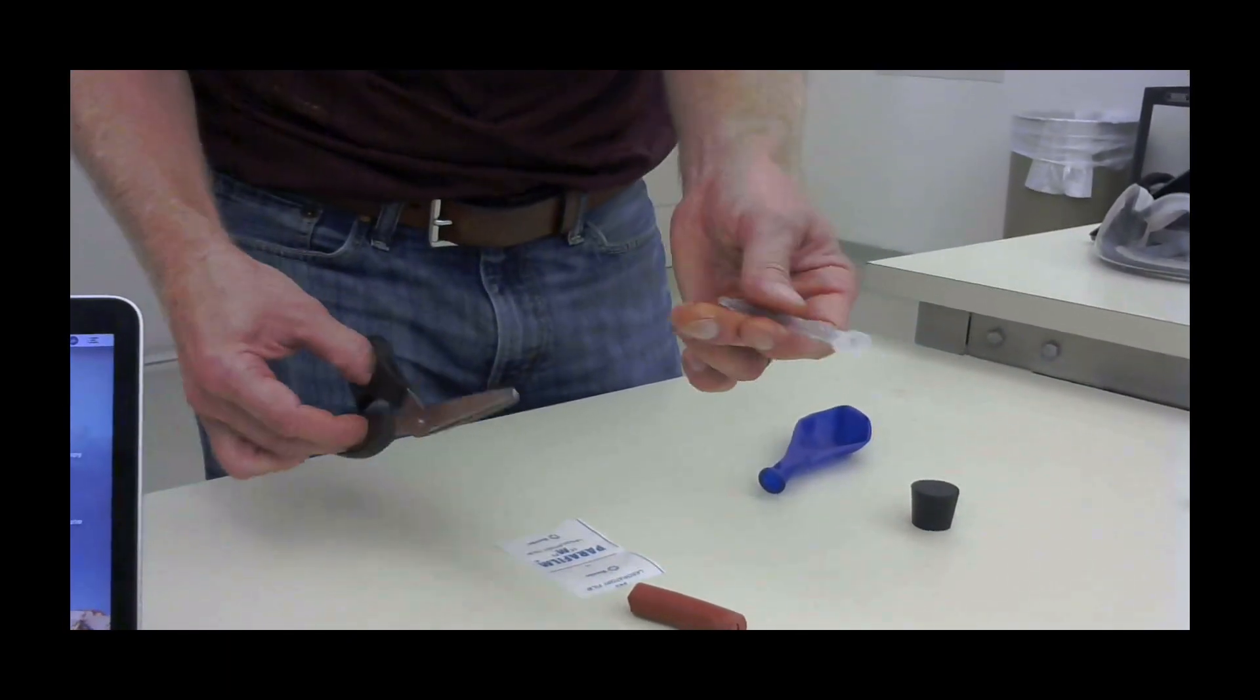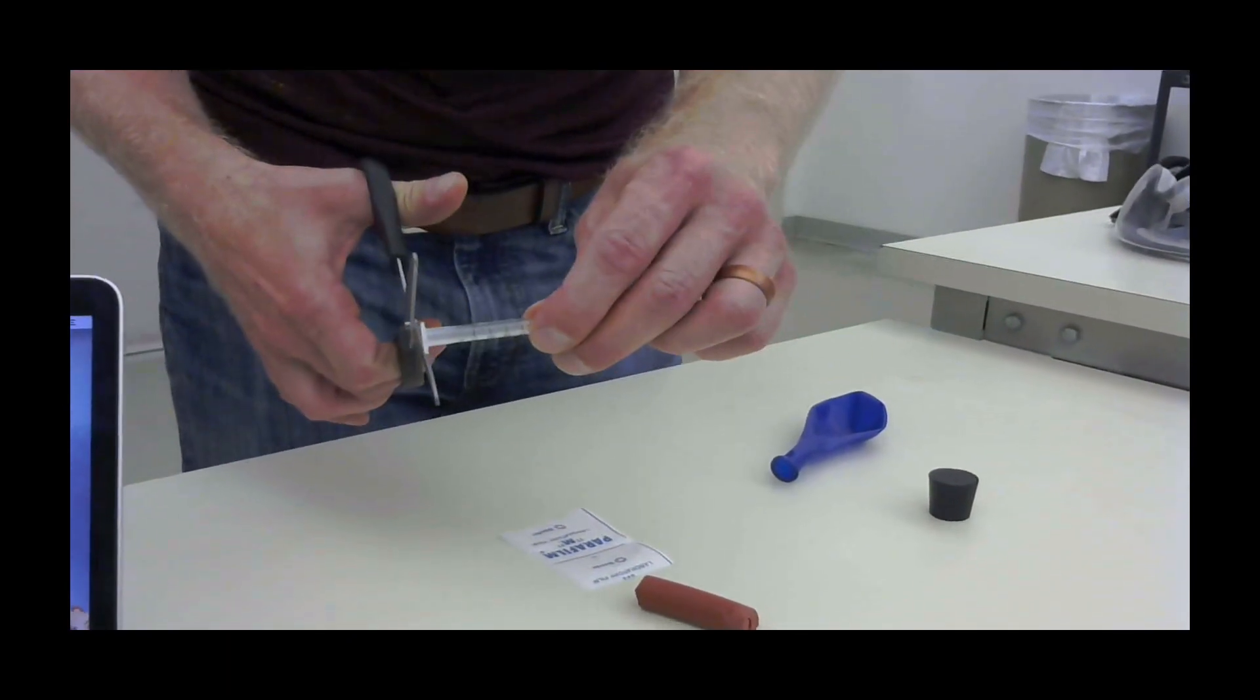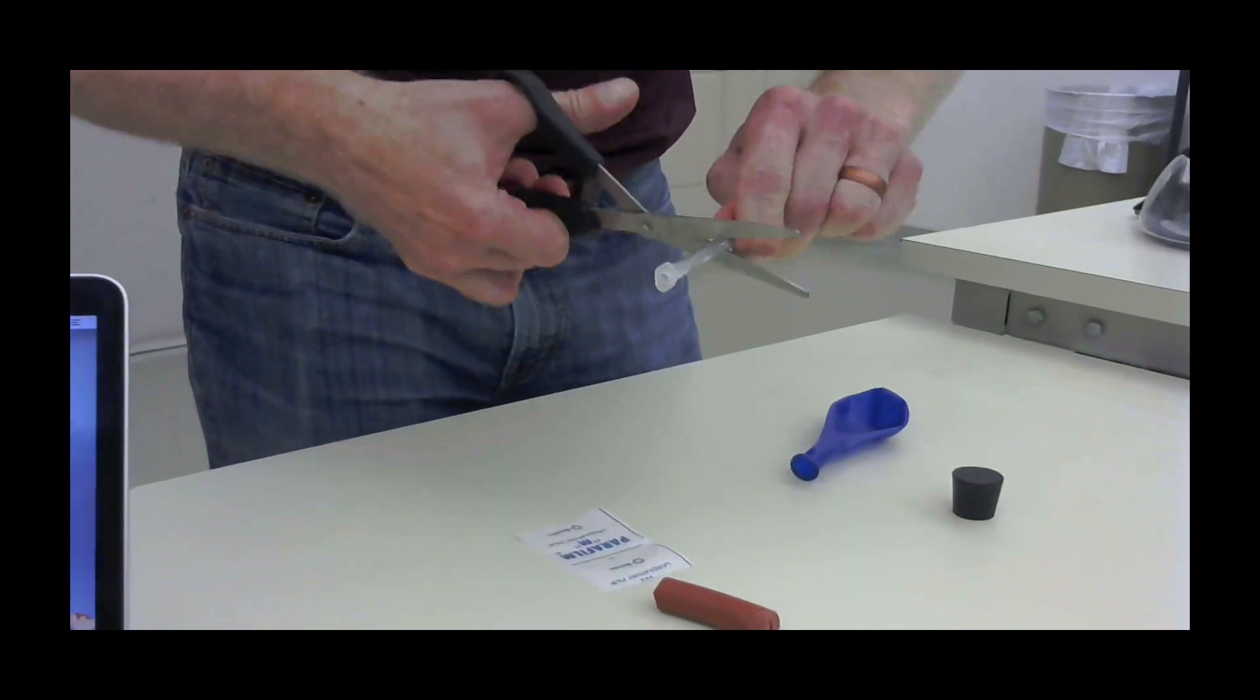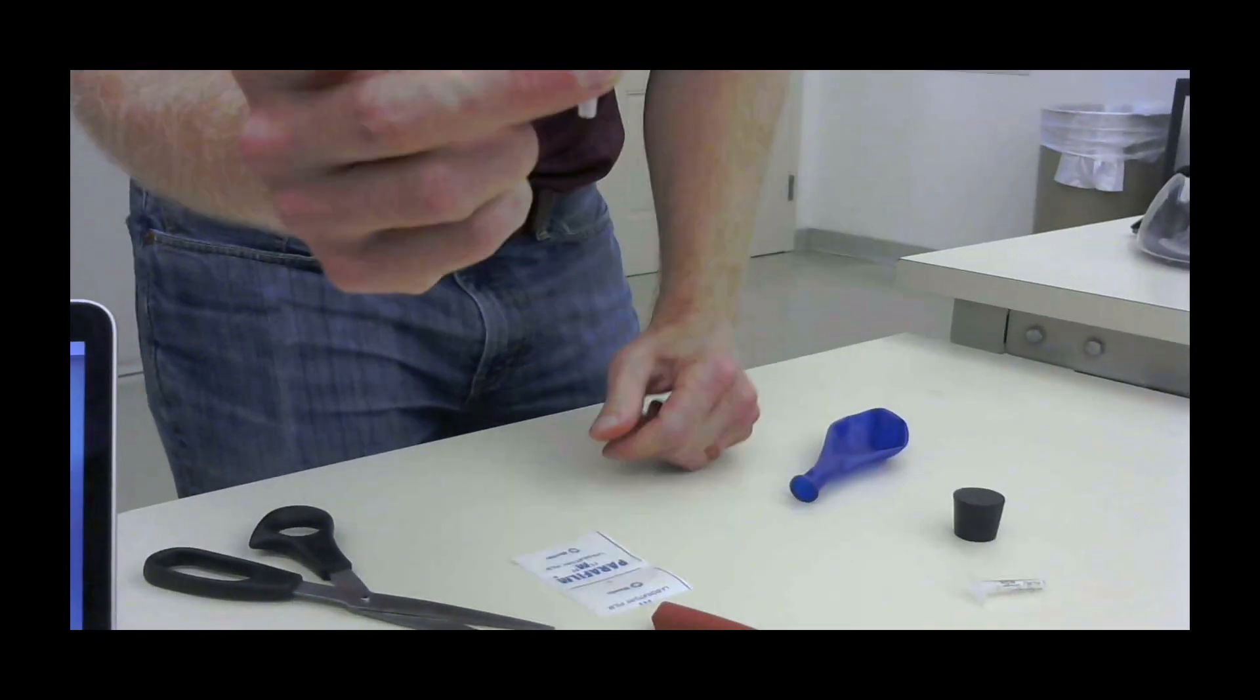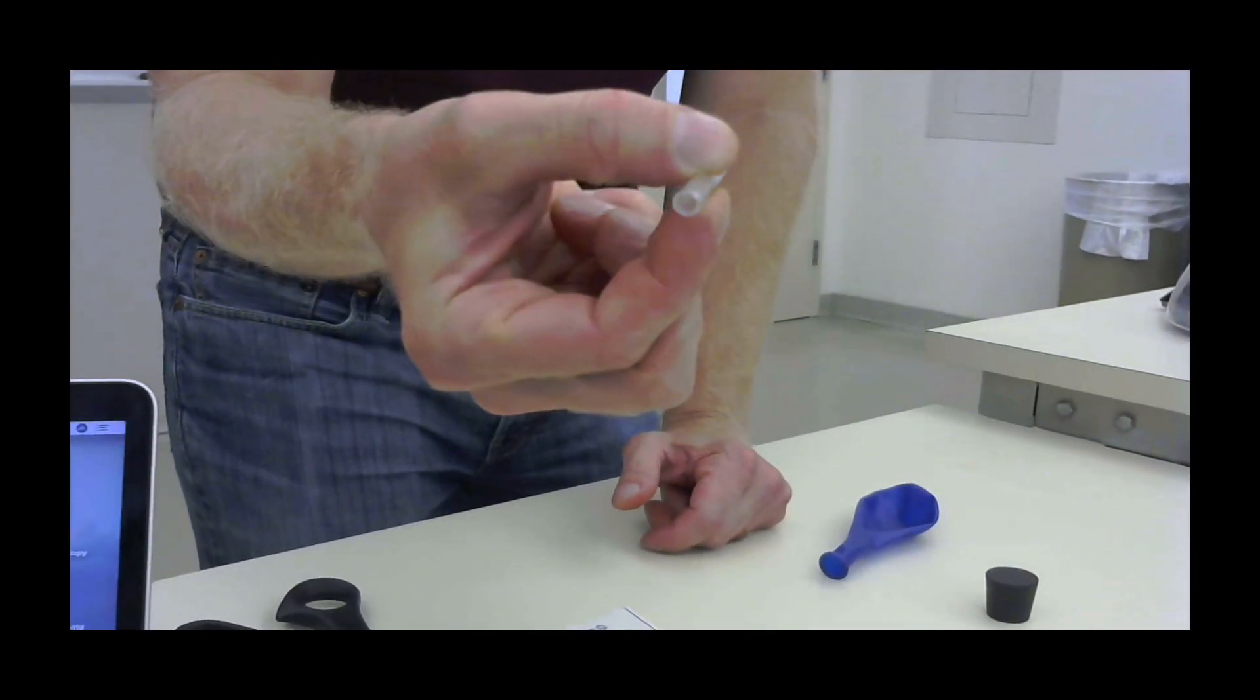Now what we want to do is we want to cut the syringe barrel. Okay, can you see? All right, so I'm going to score the syringe barrel with some scissors and then break it. So I now have a syringe barrel with an open end.